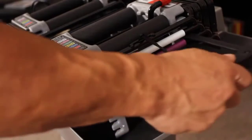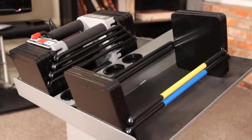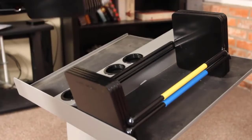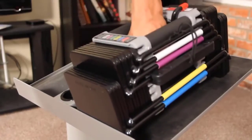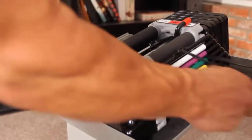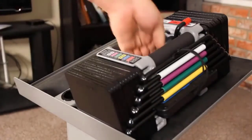The Elite 50 set can be expanded from 50 to 70 pounds per hand with the Elite Stage 2 70 kit. You simply put the Stage 1 set right inside the Stage 2 70 kit, and you're ready to go.